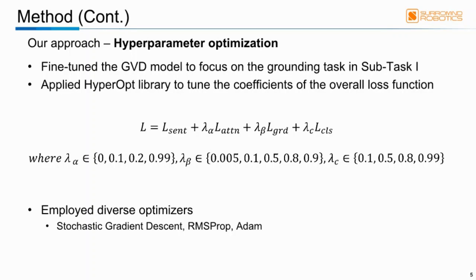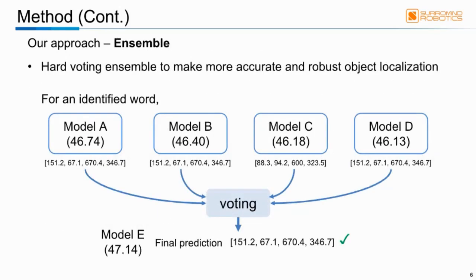In addition, we employed diverse optimizers such as Stochastic Gradient Descent, RMSProp, and Adam. With the hyperparameter optimization, we obtained four sub-optimal models, A to D, with increased performances of about 3%, from 43% to 46%, compared to the baseline model.